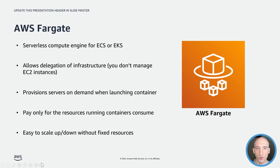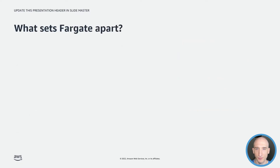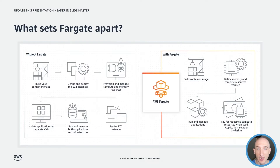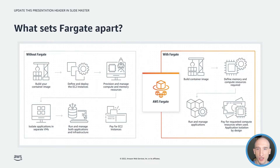Let's look at the actual difference between EC2-managed ECS containers and ECS managed by Fargate. With both approaches, you still have to build the container image, but that's where the real value of Fargate shows up. With Fargate, I don't have to define and deploy my EC2 instances, provision or manage compute or memory, isolate my applications, or manage my running applications and their infrastructure. With Fargate, I just build the image, define how much compute my app needs, and run it — just define what my app needs and let Fargate do the rest.